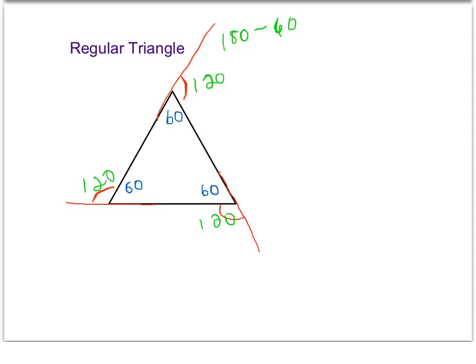If we wanted to add up the exterior angles to find the sum, that would just be 120 times the three exterior angles because there are three sides. That would give us a sum of exterior angles of 360 degrees for any regular triangle.